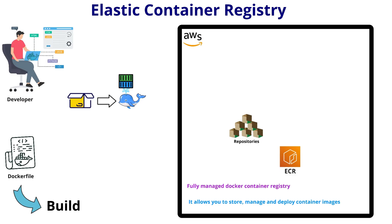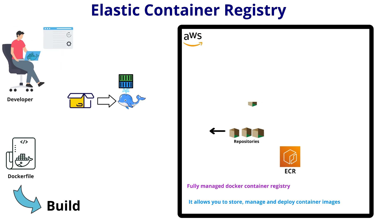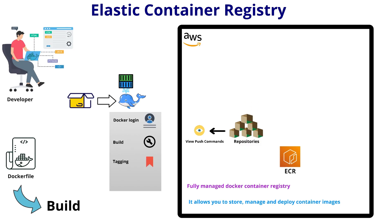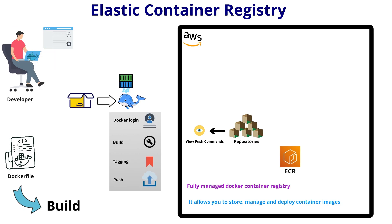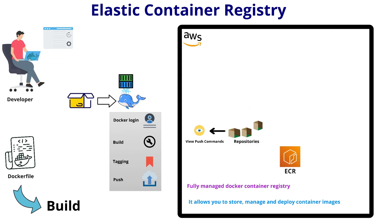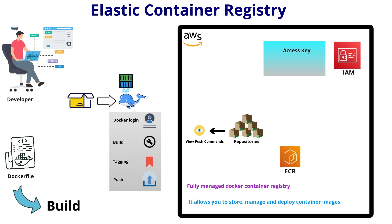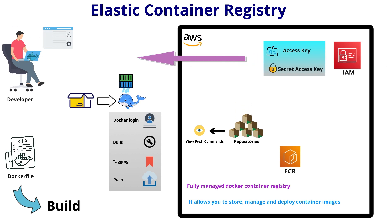Now the developer first creates a repository in ECR — this is where the image will be stored. After creating the repository, he clicks on 'View Push Commands' in the ECR console. This shows all the Docker commands needed to push the image, including login, build, tag, and push. But wait — how does he authenticate with the ECR? That's where IAM programmatic credentials come in.